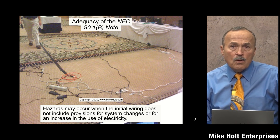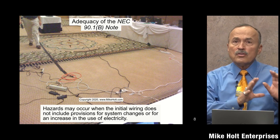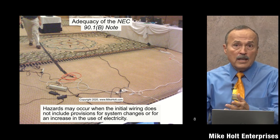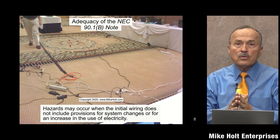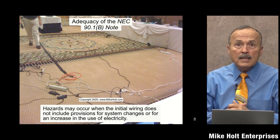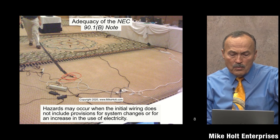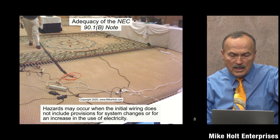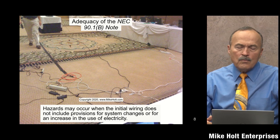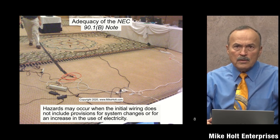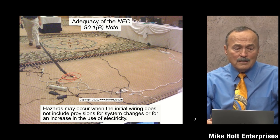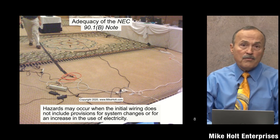Looking at 90.1(b), there are informational notes in the code — not code rules, just information. This note says: hazards may occur when the initial wiring does not include provisions for system changes or an increase in the use of electricity. The code is giving information: if you don't consider future use and adequate service, there could be problems later on.